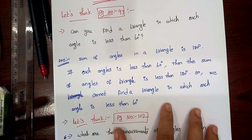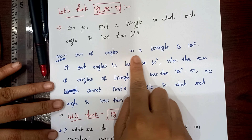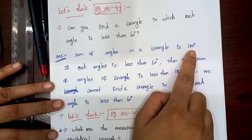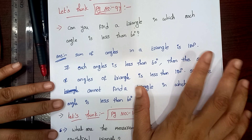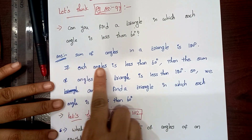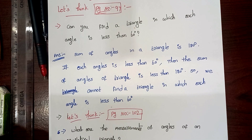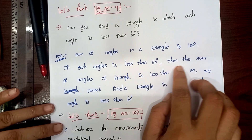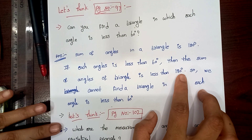So here we have a solution. The answer is: the sum of angles in a triangle is 180 degrees. A triangle in which each angle is less than 60 degrees — less than 60 degrees means below 60 degrees, that means 59, 58, 57, 56, like this. Then the sum of angles of the triangle would be less than 180 degrees.